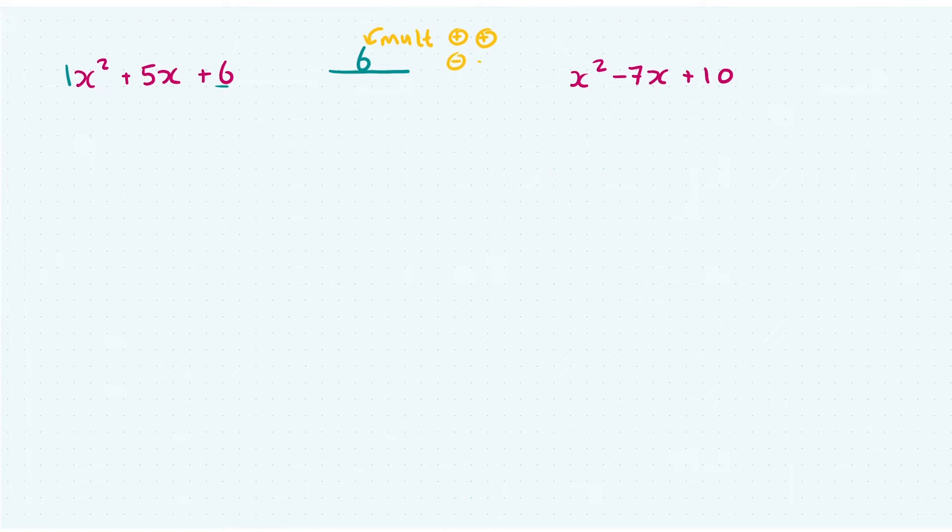Or both signs will be negative. So I need to think about that, that they're either both going to be positive numbers, or they're both going to be negative numbers. Also, we're going to be looking for two numbers that multiply to 6, but also that add up to 5. It's always going to be the number in front of the x term that you want to add to make.